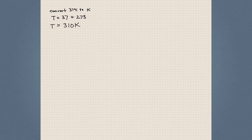That problem was simple enough, and in this class we'll be using these conversions quite a bit. Keep this number in mind — 273 — whether you're adding to Celsius or subtracting from Kelvin to convert between the two.